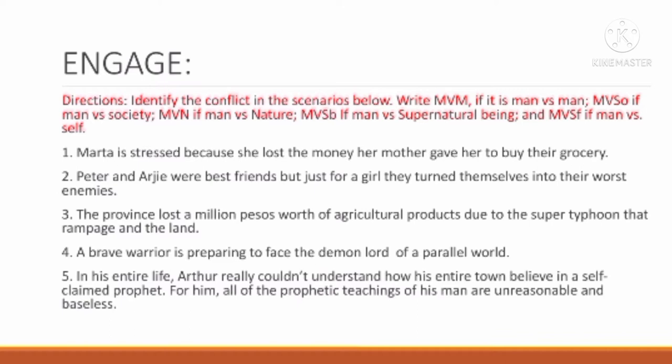Number three: The province lost a million pesos worth of agricultural products due to the super typhoon that rampaged across the land. Answer: Man versus nature — MVN. Number four: A brave warrior is preparing to face the demon lord of a parallel world. Answer: Man versus supernatural being — MVSB.